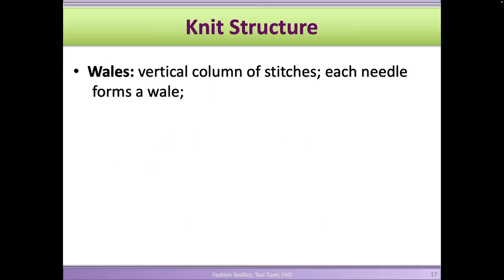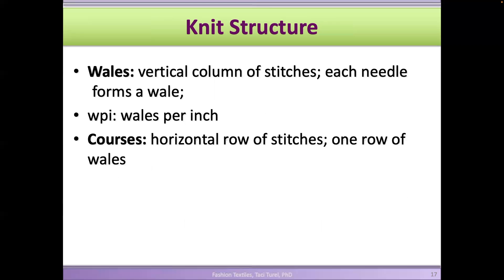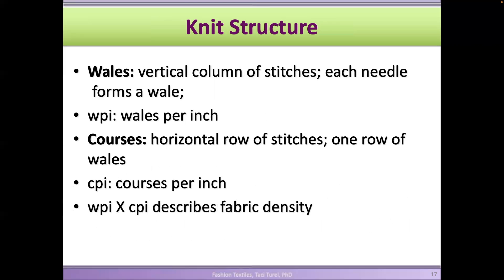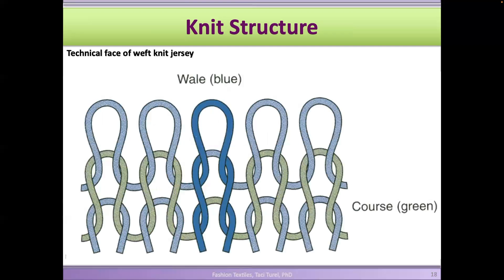In woven fabrics, we did fabric count based on the number of warp yarns and filling yarns in one inch. In knit fabrics, we do that with wales and courses. Wales are the vertical columns of stitches — each needle forms one wale, defined as wales per inch. Courses are the horizontal rows, called courses per inch (CPI). For example, if a fabric has 18 wales and 16 courses, the fabric count is 18 by 16. These loops on a knit fabric form columns (wales) and rows (courses).